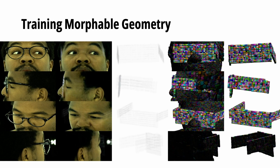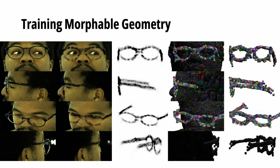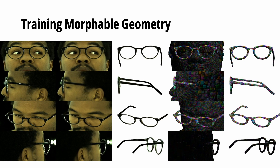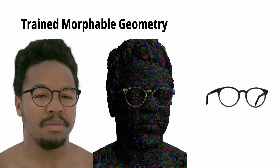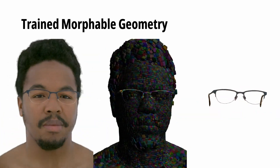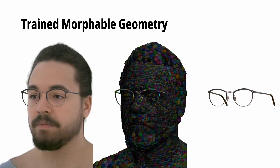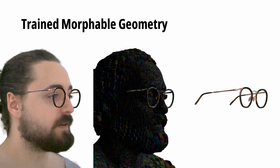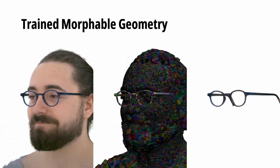Here we show the training progress of our model. As you can see, the eyeglasses geometry is initialized as three planes placed in front of the face. During learning, the geometry of the eyeglasses becomes sharper and more accurate. After morphable geometry training, we get a result that can support interpolation between different shapes of eyeglasses.